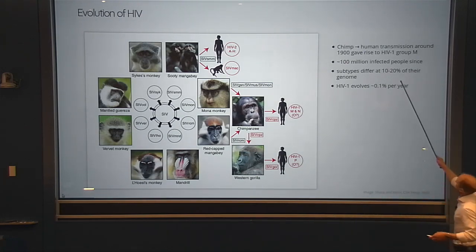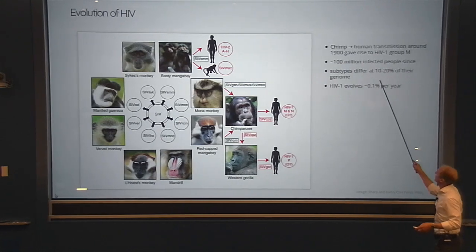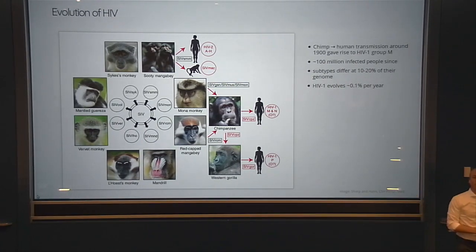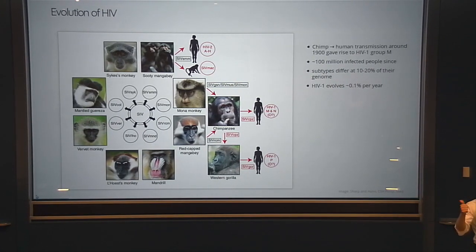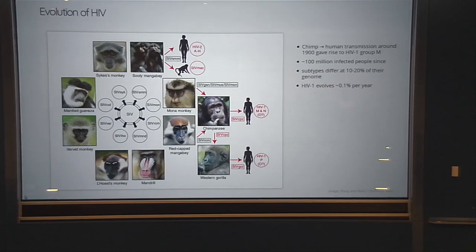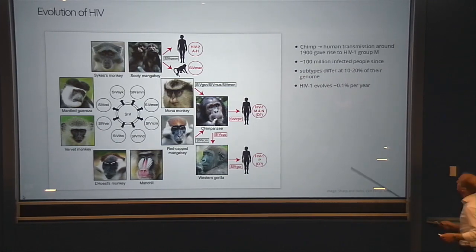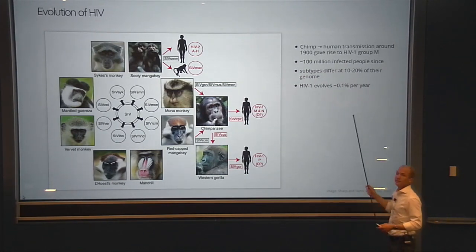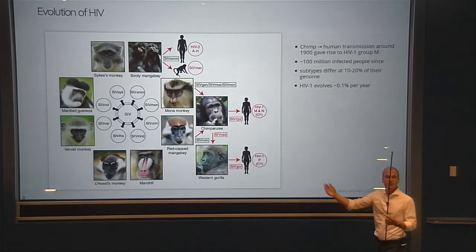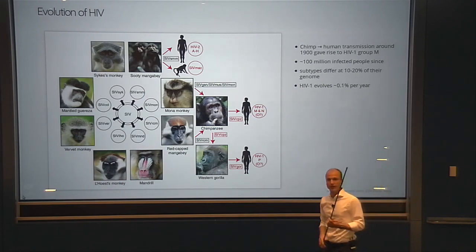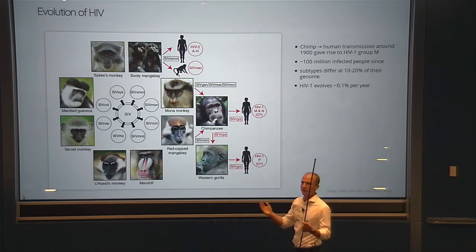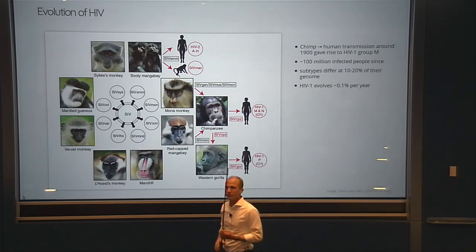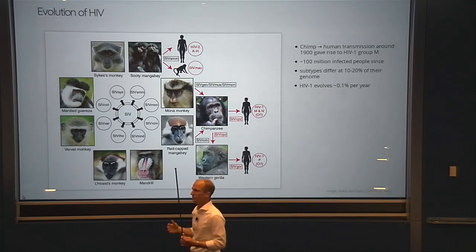This rate translates to about 1 in 1,000 changes per year, meaning in 10 years this virus covers the evolutionary distance between humans and chimps. The diversity we observe is roughly comparable to the diversity seen across mammals. It's really a system where you can observe quite macroevolutionary processes in a very short amount of time.